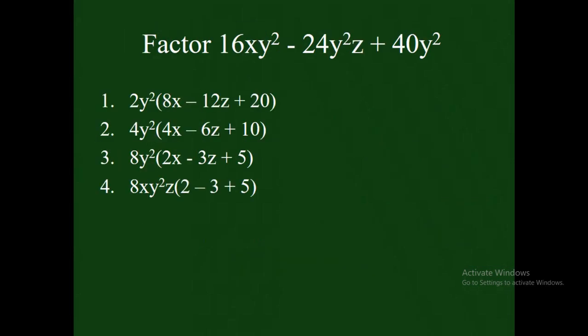I will give you another expression and you need to find the factor using the GCF. We have 16xy squared minus 24y squared z plus 40y squared. Determine the correct answer from the given choices. The correct answer is number 3.